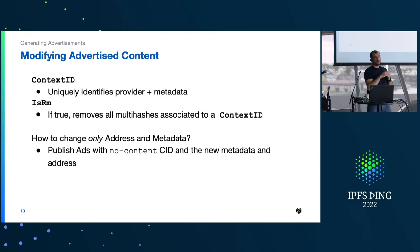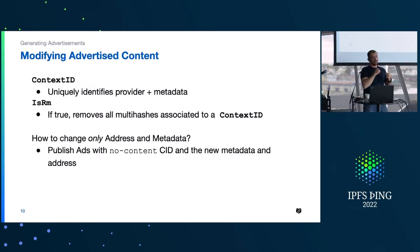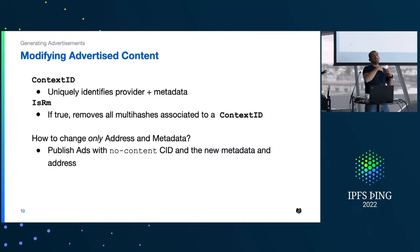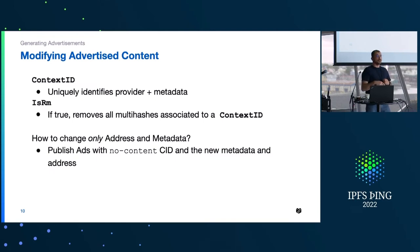The 'is_removed' field inside the advertisement defines whether content is being added or removed. In a case where you'd like to change the address and metadata associated with content without removing it, you again don't want to re-advertise all the multihashes. There's a specific no-content seed you can use as a link to entries, and you simply include the context ID with the new address and new metadata. Once that advertisement is published, the indexer node changes the information associated with that context ID.